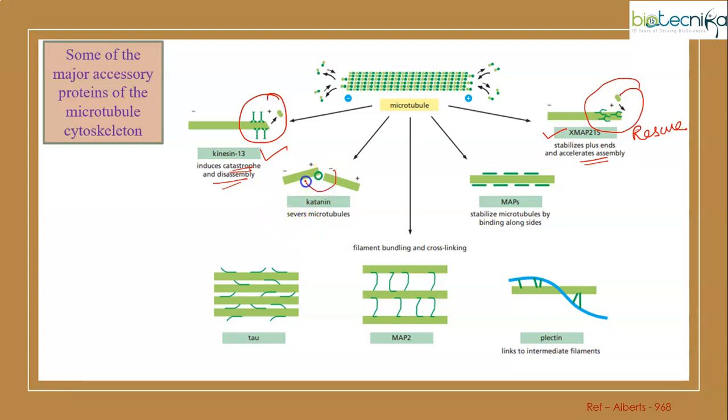Catenine breaks down the microtubules, severs them. MAPs - microtubule associated proteins - stabilize the overall microtubules by binding along the sides. We have filament bundling proteins like tau protein and MAP2, and cross-linking like plectine. Plectine basically connects two different proteins together - for example, connecting microtubules on one end towards intermediate filaments on the other.